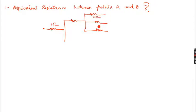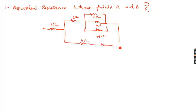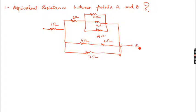The circuit has 3Ω, 4Ω, and 4Ω resistors, then a 2Ω resistor, then 5Ω and 6Ω, and then 7Ω. I need to find out the equivalent resistance between A and B. So how can you find this?